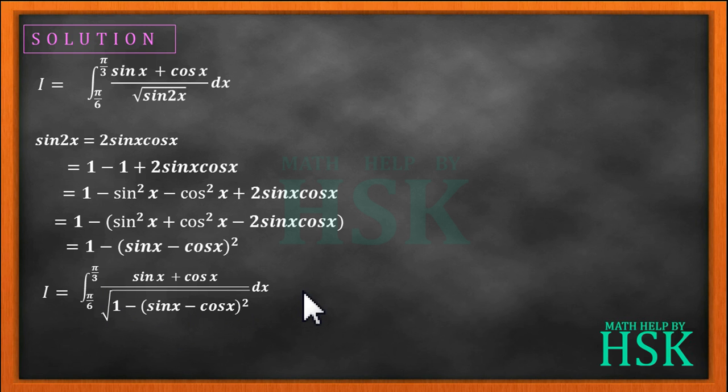Now you can see that differentiation of sin x minus cos x is equal to cos x plus sin x which is there in the numerator. So the reason why we solved sin 2x was to make the substitution possible for solving the integral.